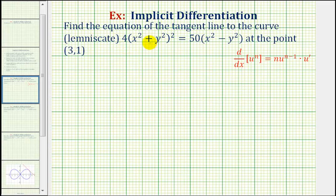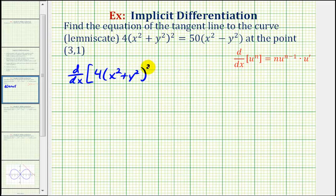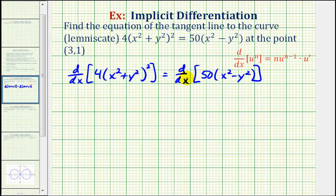The first step is to differentiate both sides of the equation with respect to x. So we'll have the derivative of 4 times the quantity x squared plus y squared to the second with respect to x, equal to the derivative of 50 times the quantity x squared minus y squared with respect to x. We'll differentiate as we normally would, but if a term contains y, we'll have an extra factor of dy/dx because we apply the chain rule.